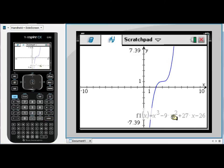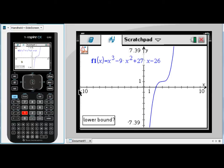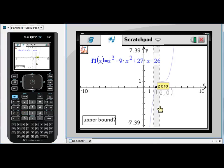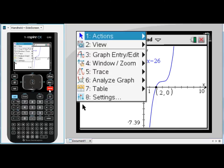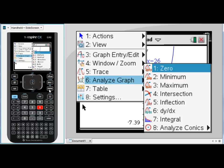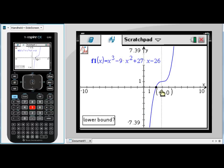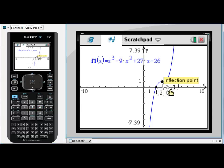In identifying key points on this graph, I've got an x-intercept, so a zero. Menu 6, 1 for zero. Somewhere to the left, somewhere to the right. There's my x-intercept. This time I'm interested in a point of inflection. So menu 6 and 5 for inflection. Somewhere to the left, somewhere to the right. We get our inflection point. Again, I can move those coordinates so I can read them more clearly.